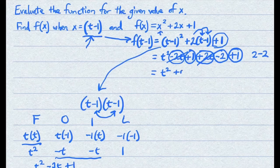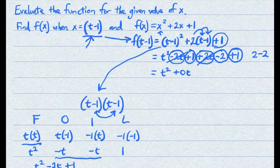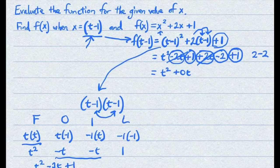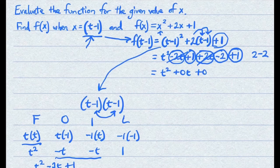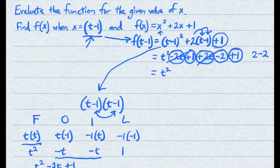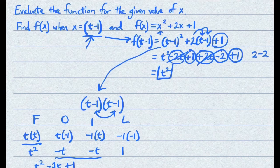So before you simplify further, your current answer is t squared plus 0t plus 0. Your simplified final answer for this question is just going to be t squared.